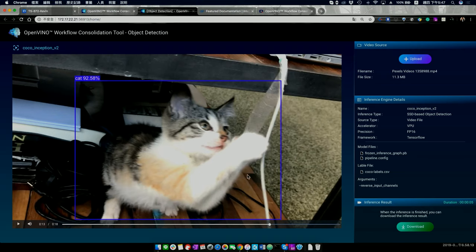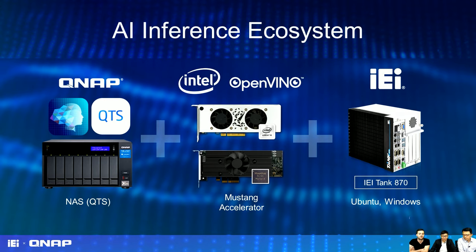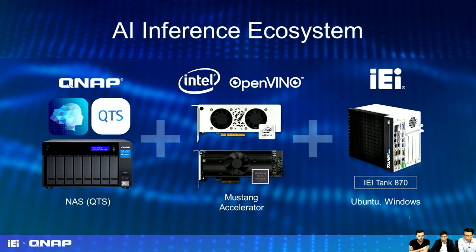Let's go back to the slides. To summarize: the QNAP NAS can now do inference using the OpenVINO workflow consolidation tool. You can also use QTS tools like Download Station to download datasets, and QVR Pro to capture surveillance video. IEI provides Mustang accelerator cards — FPGA and VPU — for better deep learning inference performance. Together, Intel OpenVINO, QNAP, and IEI form an AI inference ecosystem.